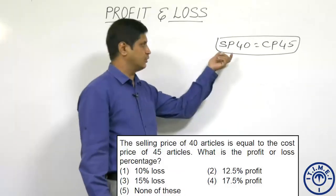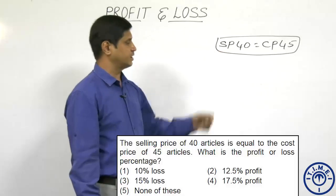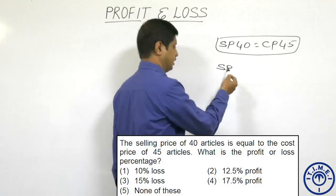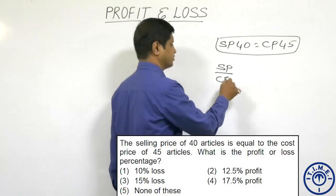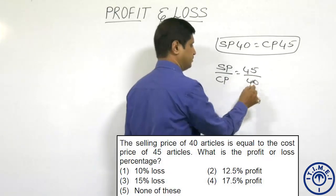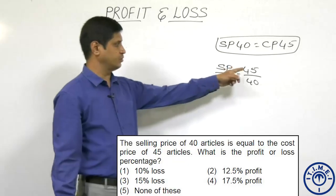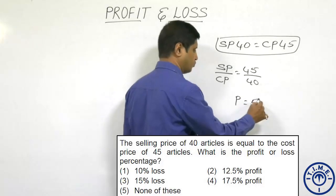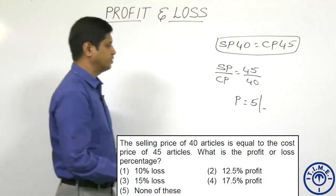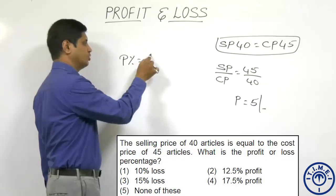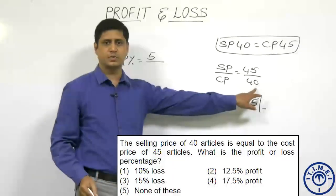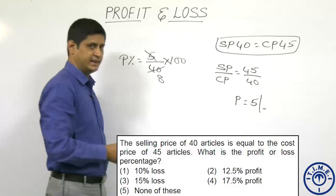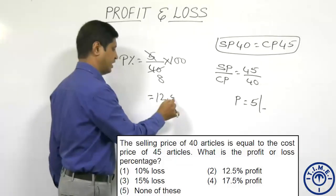A third method: rearranging the condition, selling price/cost price = 45/40. So selling price is 45 and cost price is 40. Selling price is more, so it is a profit. Profit is ₹5. Profit percentage = 5/40 × 100 = 12.5 percent.